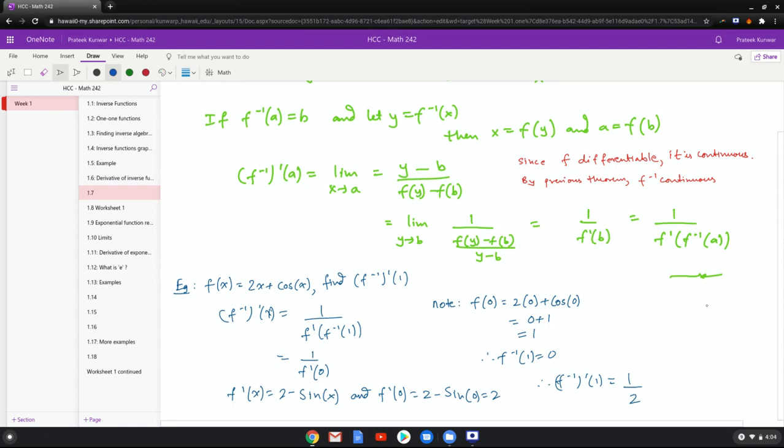Here's an example: you're given the function 2x plus cosine x and you're asked to find the derivative of the inverse function at 1. Now here's a cool thing about this result: you don't really have to find an explicit expression for the inverse function and then take the derivative, plug in 1, etc.